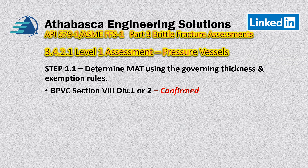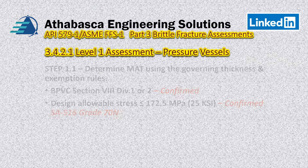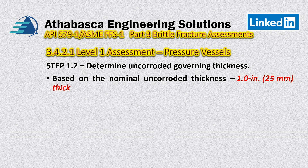Continuing, we have to review some exemption rules. Level one is valid only for boiler pressure vessel code Section Eight Division One and Two, and we've just confirmed that. The design allowable stress must be less than 25 KSI or 172.5 megapascals, and we've confirmed that based upon the allowable stress for SA 516 Grade 70N. Now we'll continue looking at step 1.2 — determine the uncorroded governing thickness. For shell, it's relatively simple: it's based upon the nominal uncorroded thickness of the plate. For shells, we just look at the nominal thickness. These rules are consistent across the boiler pressure vessel code as well. So in this case, we're at 1.0 inches.